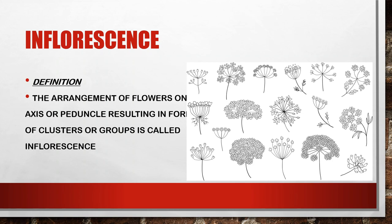The arrangement of flowers is on the peduncle. It is possible to see different arrangements. Some flowers are present on one level, some start from a single point, and some start from different axes and different levels. So this arrangement is known as inflorescence.